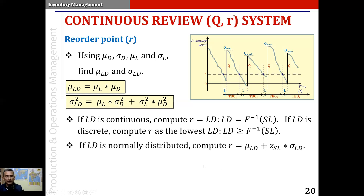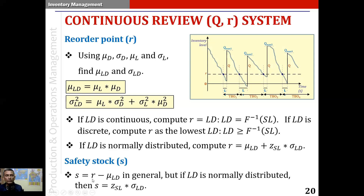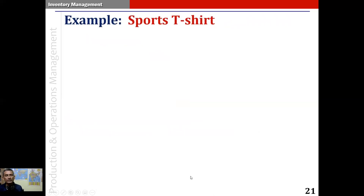In the special case when lead time demand is normally distributed, we can compute R as the mean lead time demand plus Z of the service level multiplied by sigma of the lead time demand. The safety stock is in general the reorder point minus the mean lead time demand, but if lead time demand is normally distributed, the safety stock is the Z-value corresponding to the service level multiplied by the standard deviation of lead time demand.